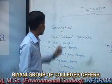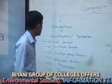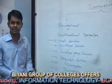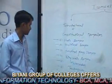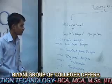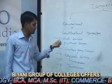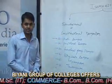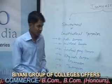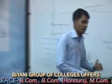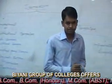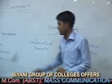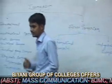Stereoisomers are basically classified in two parts: first one is structural and second one is stereo. Structural isomers are also called constitutional isomers and regio-isomers. Regio-isomers are classified in six categories.